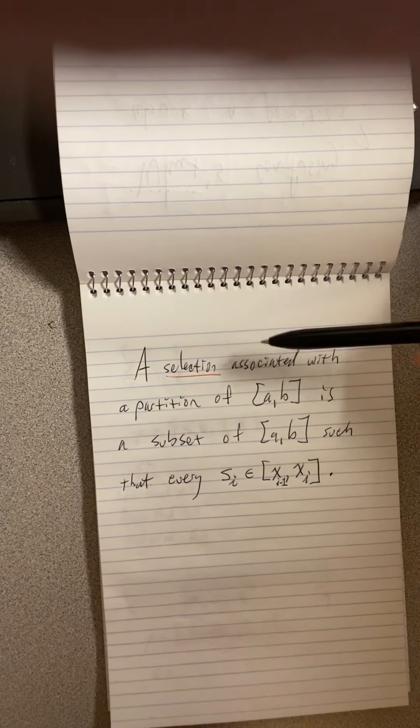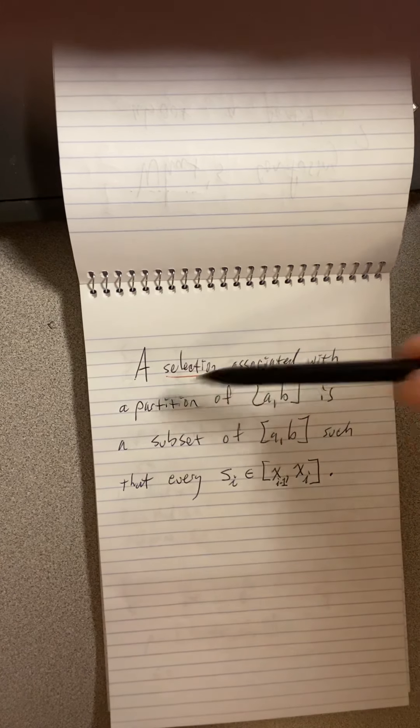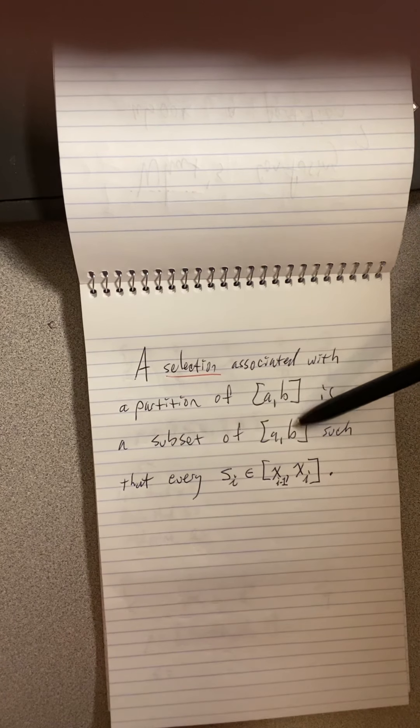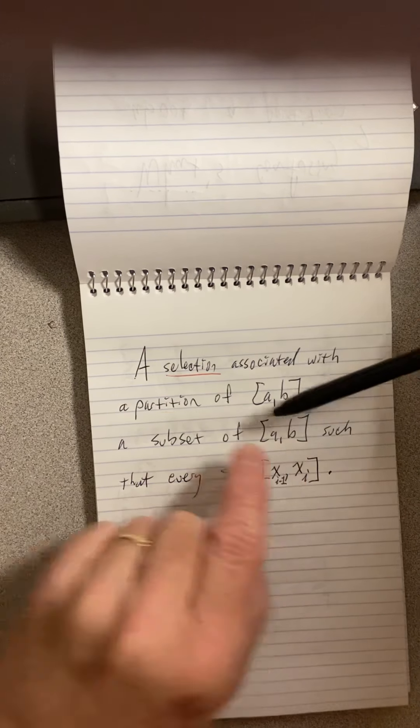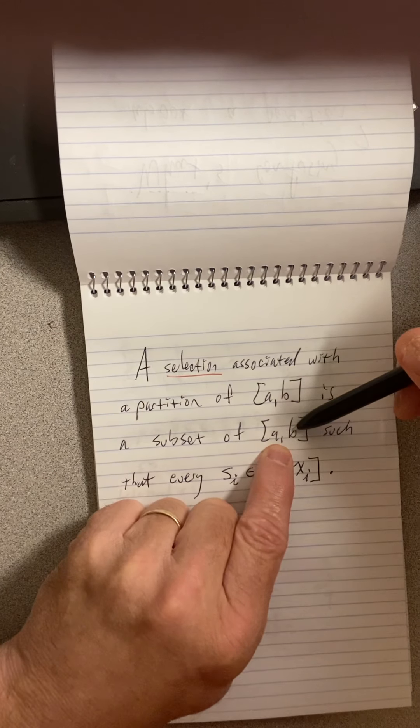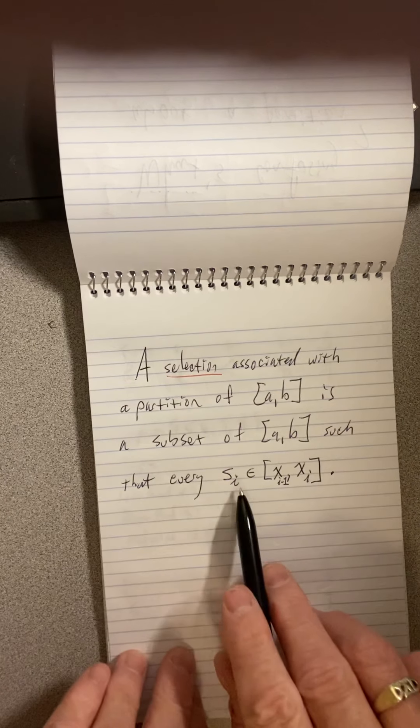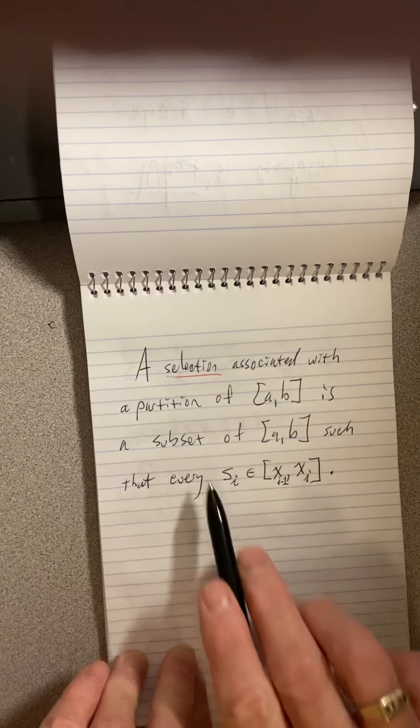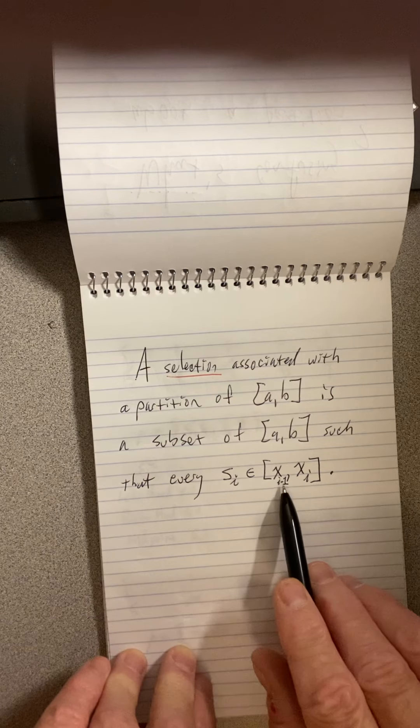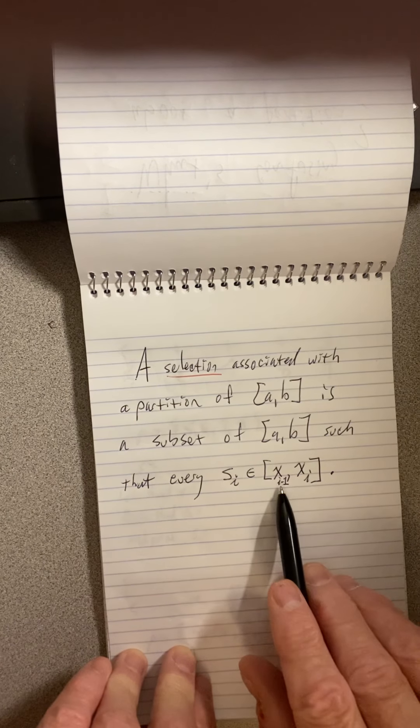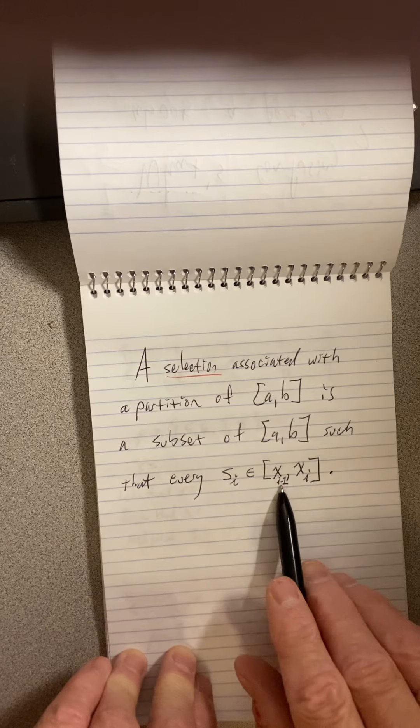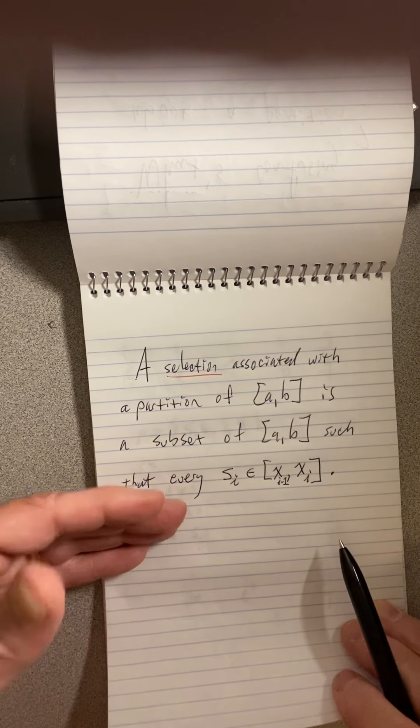So now we're going to move on to a selection. Selections are associated with partitions. A selection associated with a partition of some interval is also a subset of the interval. So again, I'm picking from here. Some students always think I have to pick from the partition. No, no, no, you do not. You pick your selection points from the interval. But you must do so in a certain way. You must do so such that every selection point, S stands for one of the members of the selection, and i is just whichever one you're grabbing. First, second, third, fifth.